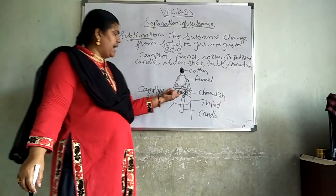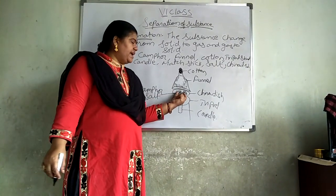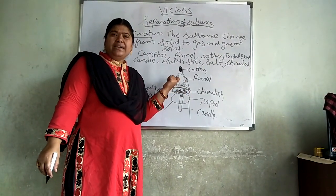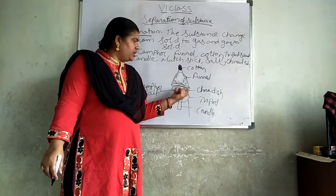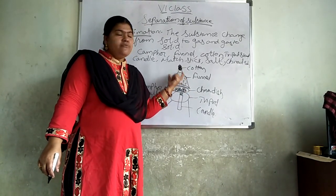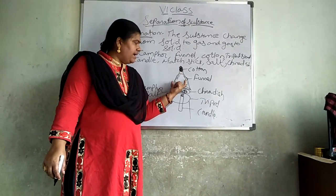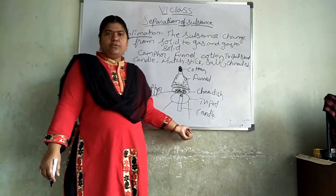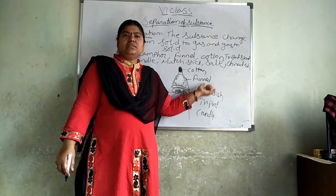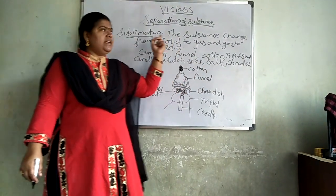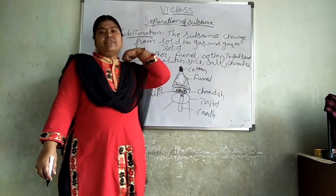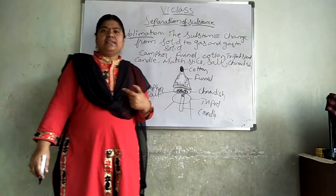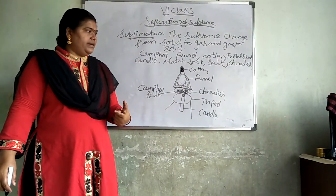Now start heating the camphor. The camphor, which is in solid form, will change into vapor form. When it cools down, again it comes back into its normal solid position. This is called the sublimation process. I will do this experiment and show you, then you will understand clearly.